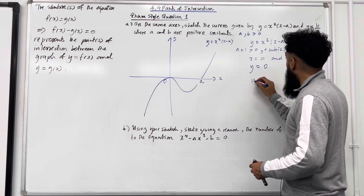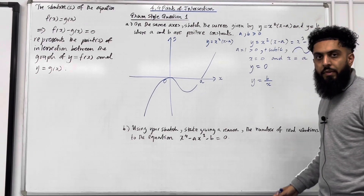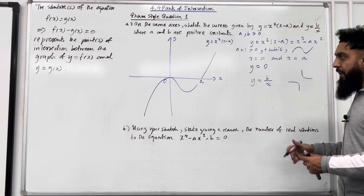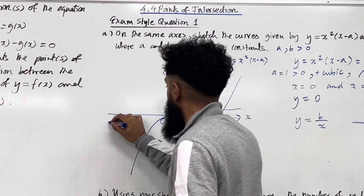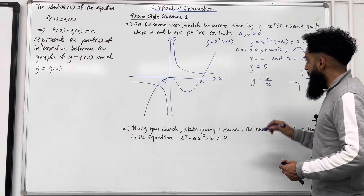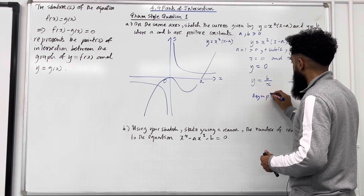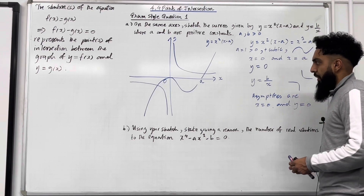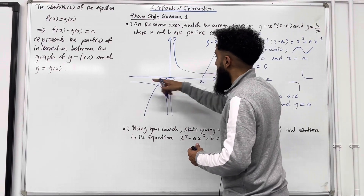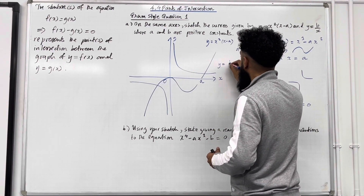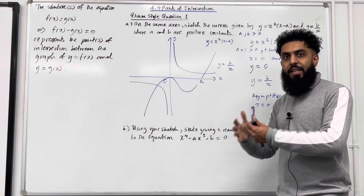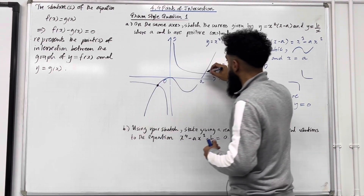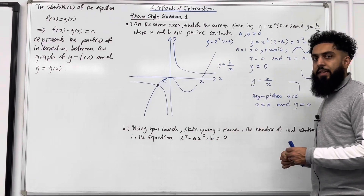Let's have a look at the graph of y = b/x. Since b is a positive constant, this reciprocal graph takes the standard shape in the first and third quadrants. The asymptotes are x = 0 and y = 0. I can label the reciprocal graph as y = b/x. These two graphs will intersect at two points — here is the first point and here is the second point. That completes part A.